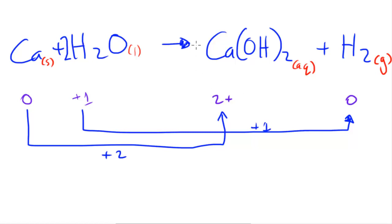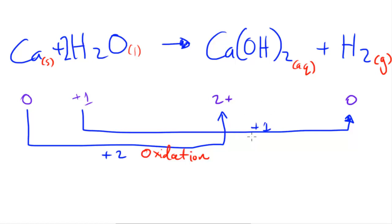Linking these up: calcium has gone from 0 to 2+, so it has lost electrons — this is oxidation. Hydrogen in H₂O has gained electrons, going from +1 to zero, so it has been reduced by one.